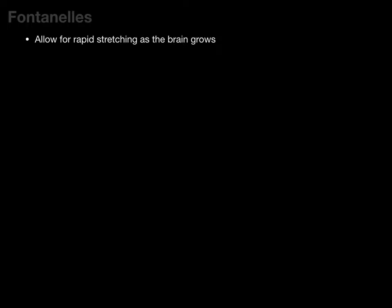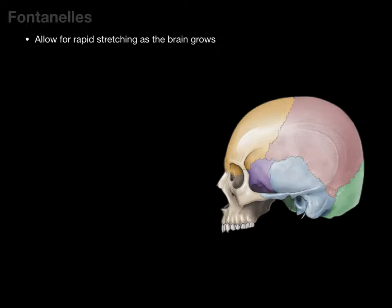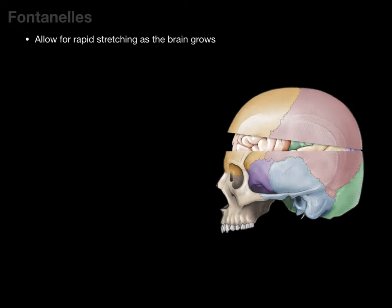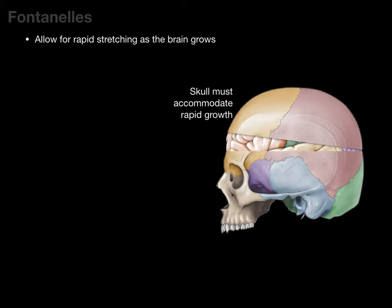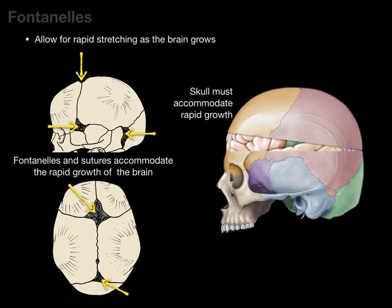Another reason for fontanelles is to allow for rapid stretching as the brain grows. Here's a lateral view — taking an axial section and lifting up the skull, we see the brain. As the brain begins to grow and pushes against the skull, the skull must accommodate this rapid growth. The fetal brain grows much faster than the surrounding bone, especially in the first four years after birth, and the skull accommodates for this rapid growth.